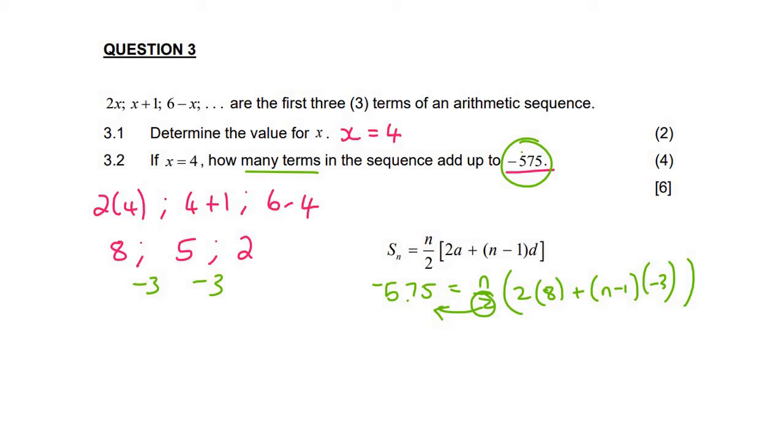Then there's multiple ways to solve this, but what I like to do is I take this 2 and I multiply it across. And that's going to give us negative 1150 equals n. And then inside the brackets you're going to get 16. Actually that'll become minus 3n plus 3.